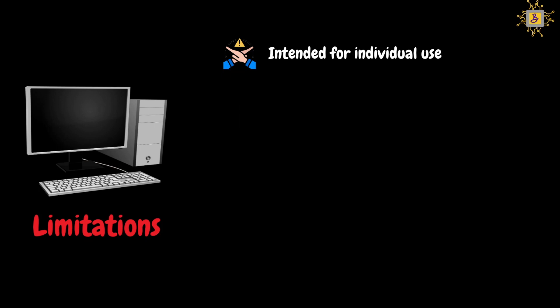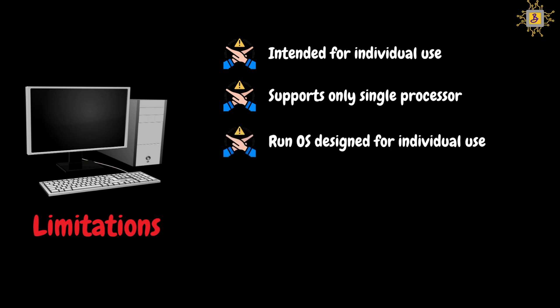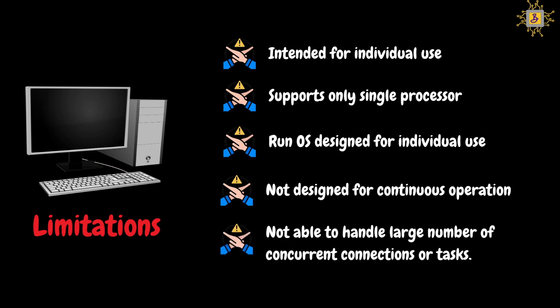Desktops are designed for personal or individual use only — for general tasks like web browsing, document creation, editing, and gaming. They use a processor designed for individual needs and support only a single processor, not designed to work with another processor. Desktops run operating systems designed for individual use, like Windows 10, Linux, or Mac OS. They are not designed for continuous operation and are usually shut down or put to sleep when not in use. However, servers should be available 24/7 and provide service to clients. Desktops are not as scalable as servers for handling large numbers of concurrent connections or tasks. In summary, servers offer high performance, reliability, and scalability, making them suitable for business-critical applications.